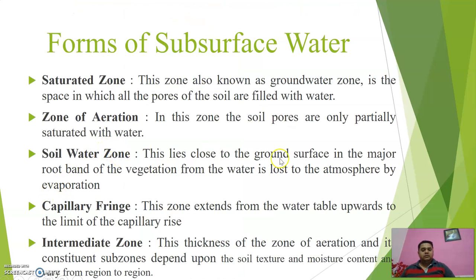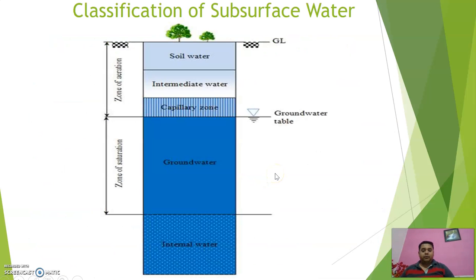Soil water zone: this lies close to the ground surface in the major root band of the vegetation, from where water is lost to the atmosphere by evaporation. The roots of the vegetation extend into the soil water zone, and soil water is responsible for the growth of vegetation. In hot summer, evaporation causes the land to become dry, and that dryness comes from the soil water.